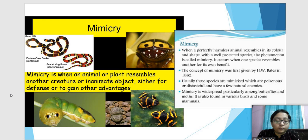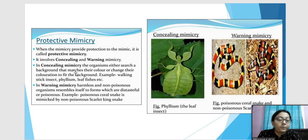Mimicry is of different types. The first is protective mimicry, which is very common — when the organism is trying to protect itself. It is of two types: concealing mimicry, where the leaf insect has hidden itself such that it can be confused as a leaf of a plant.